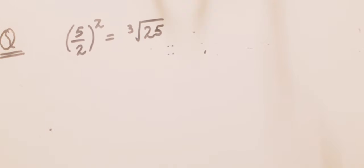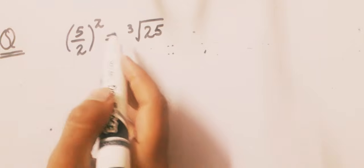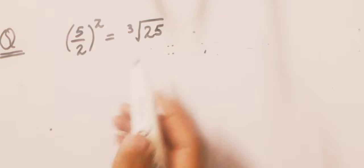Bismillahirrahmanirrahim, assalamu alaikum. Welcome back to Math Solver. In today's video, we will solve a very important Olympiad question, mostly asked in university exams: (5/2)^z = ∛25.